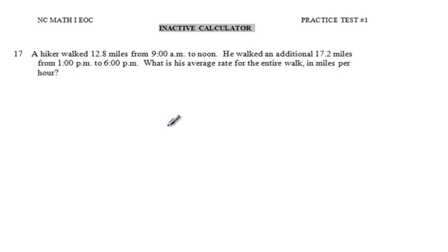A hiker walked 12.8 miles from 9am to noon - that's 3 hours from 9 to noon. He walked an additional 17.2 miles from 1 to 6 - 6 minus 1, that's 5 hours. What is the average rate for the entire walk?